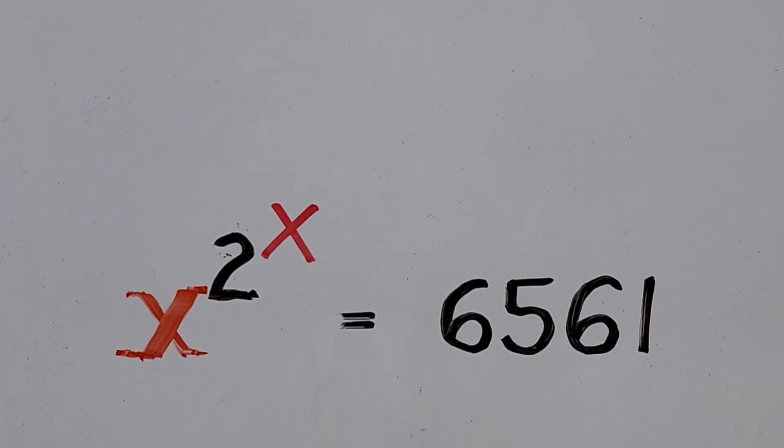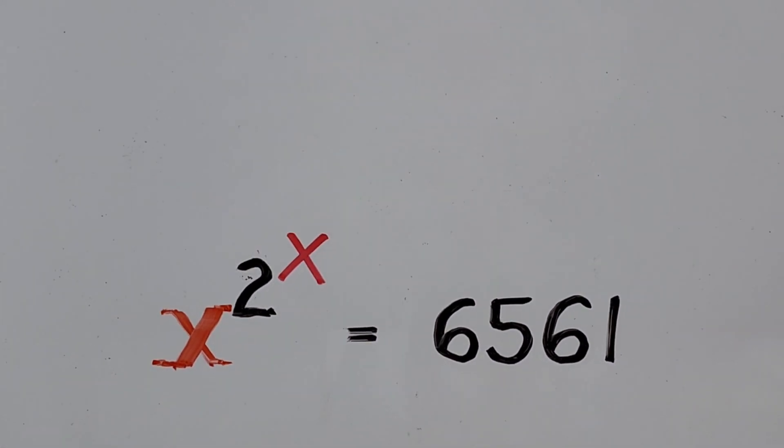In this kind of equation, what we have to do is convert this constant on the right into an exponential form. So since this number is divisible by 3, we'll be getting its factor in terms of 3 and convert it into exponential form. From here we start dividing by 3.